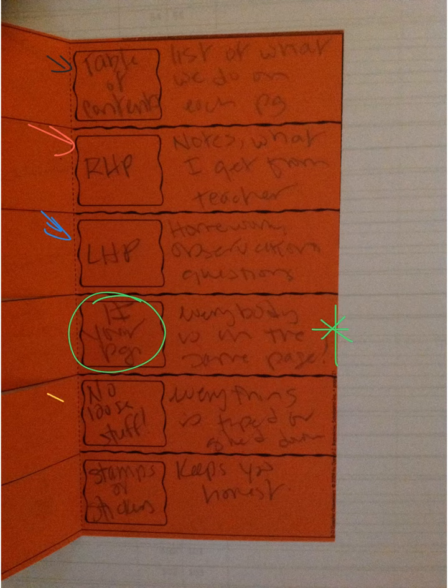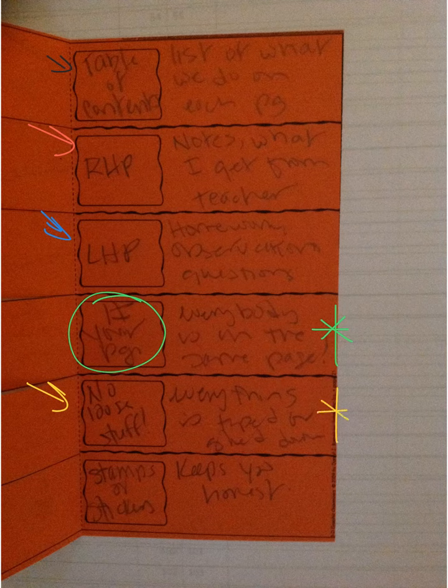The rule of attachment means no loose stuff. If I give you something, we have to tape it down, glue it down, or duct tape it down. We want to make sure that everything is in the spiral — whether it's taped vertically, horizontally, folded, or as a flipbook. No loose stuff means everything is taped or glued down.